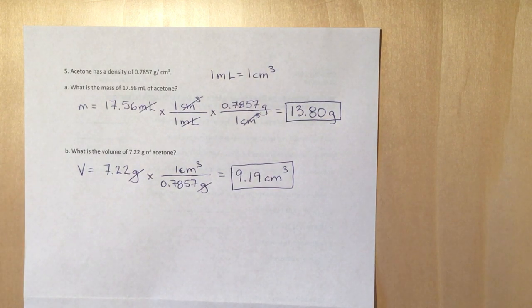And then the second question, what is the volume of 7.22 grams of acetone? A little easier. You only need to use the density as the conversion factor, but you're flipping it over this time to get volume.